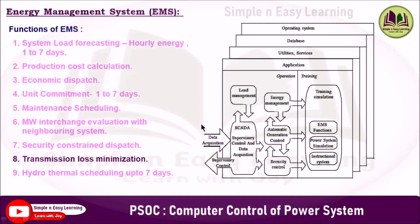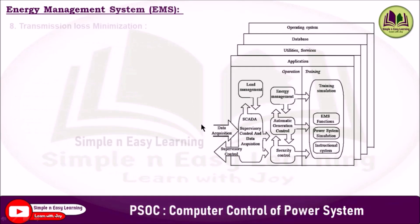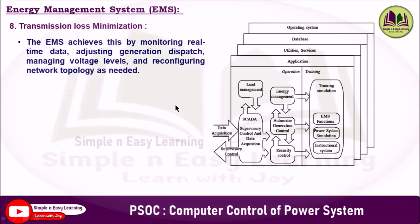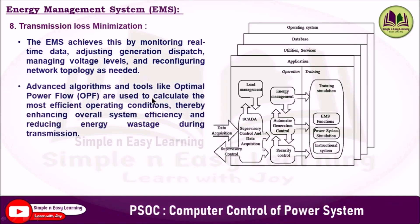The eighth function is transmission loss minimization. The EMS achieves this by monitoring real-time data, adjusting generation dispatch, managing voltage levels, and reconfiguring network topology as needed. Advanced algorithms and tools like optimal power flow are used to calculate the most efficient operating conditions, thereby enhancing overall system efficiency and reducing energy wastage during transmission.